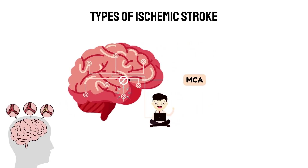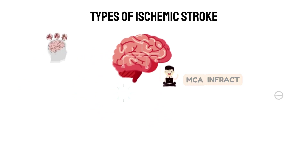For example, if the middle cerebral artery is blocked, there will be inadequate blood supply to the region of the brain to which the middle cerebral artery supplies blood. This is called middle cerebral artery infarction, or MCA infarct.